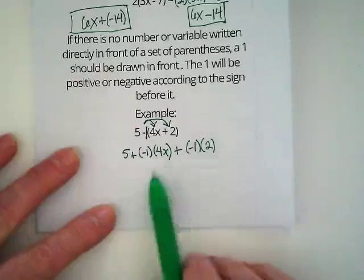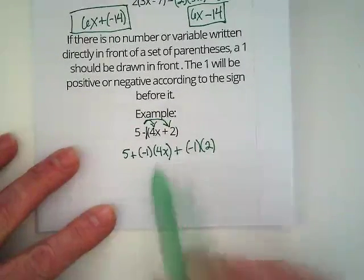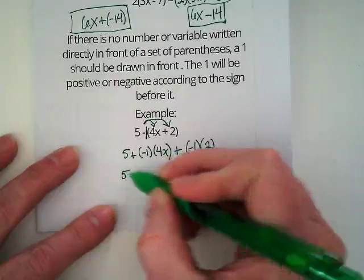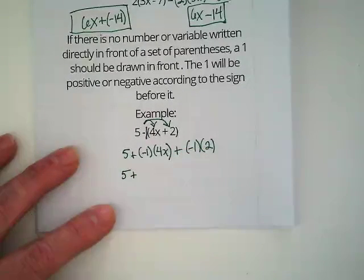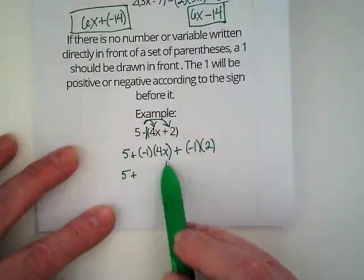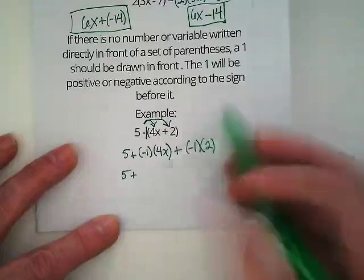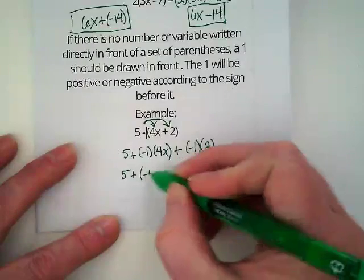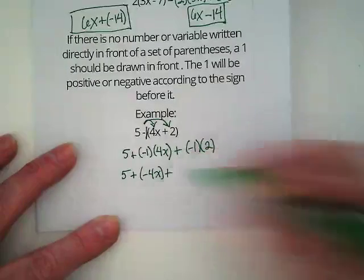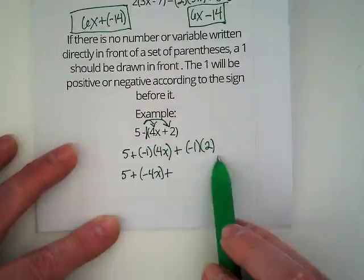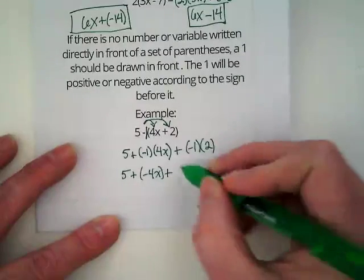To simplify that, we would then do the multiplication. This 5 is just staying out in front until we're finished because it's addition and we still follow order of operations. Negative 1 times 4x would become negative 4x plus negative 1 times 2. Negative 2.